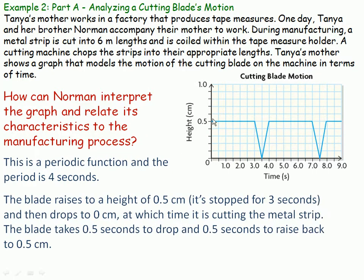The next part describes what's actually happening with the blade. The blade is stopped for three seconds, and it's a half a centimeter above the cutting surface. After being stopped for three seconds, it takes a half a second to drop. When it's down here, it's actually cutting the metal strip. After it's cut, it takes a half a second to rise again, and that's the end of the period.